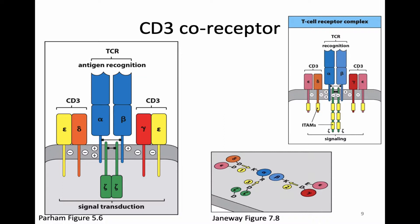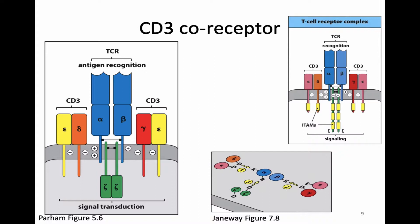CD3 solves one part of our problem with the T cell receptor — the same problem that Ig-alpha and Ig-beta solve — in that they give the T cell receptor an intracellular domain containing a tyrosine in the ITAM that can be phosphorylated. We still are missing enzymatic machinery, however. In the case of B cells, there is a kinase we'll learn more about later. In the case of T cells, we can talk a little bit more about the kinase now.